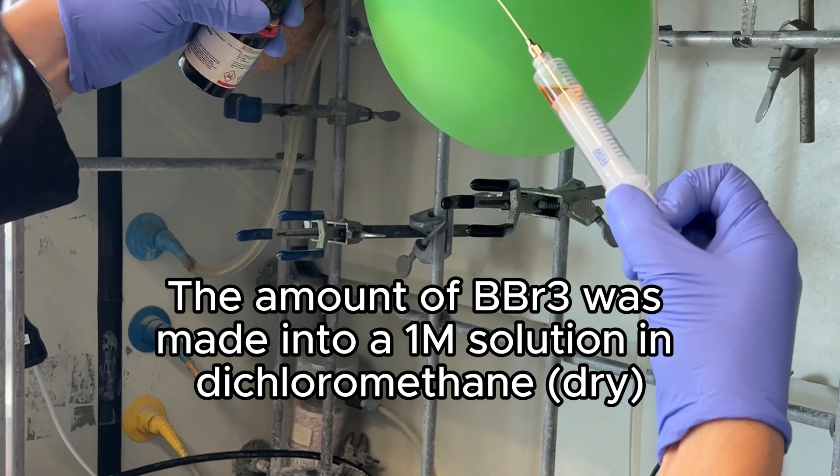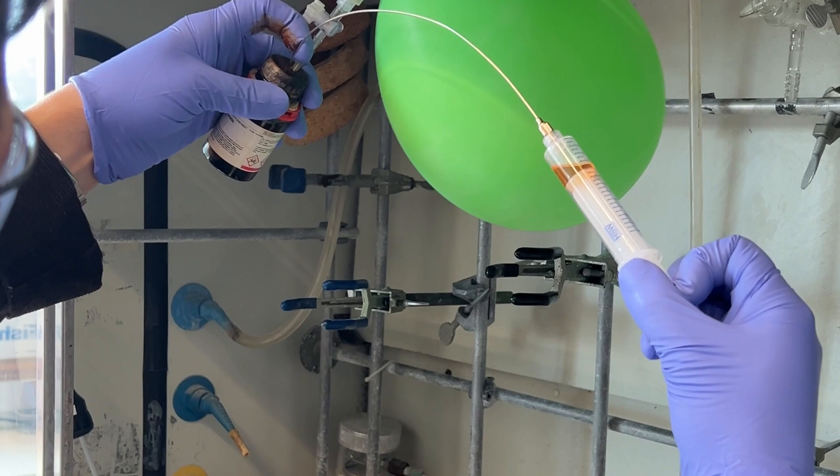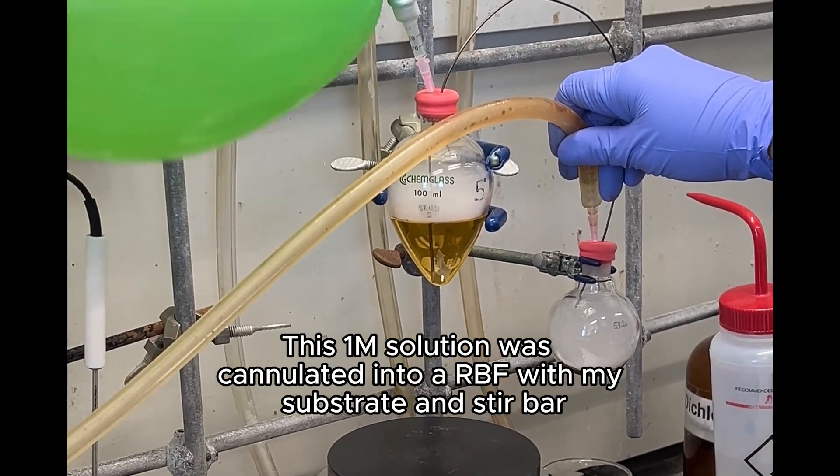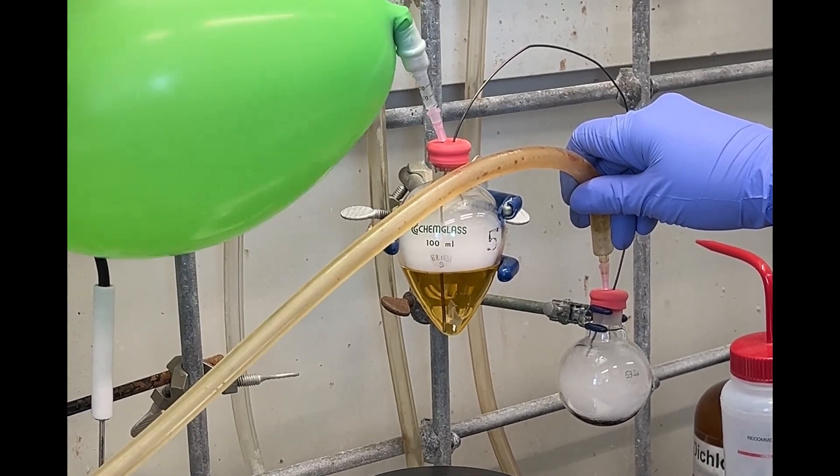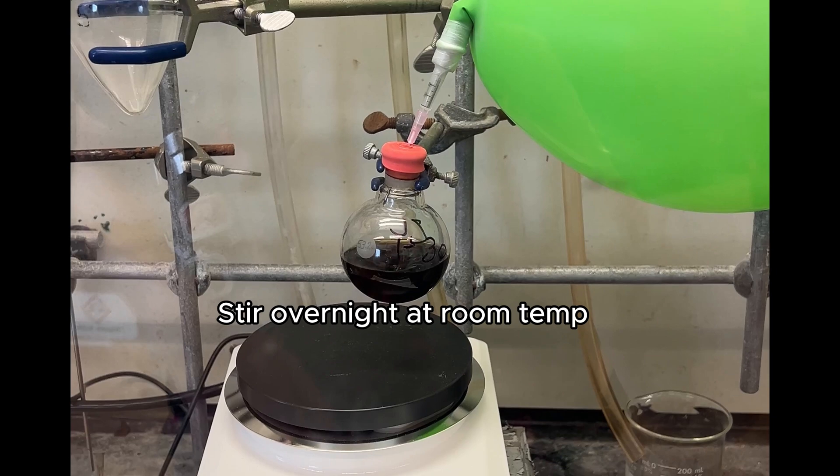I was able to take this amount of BBR3 to make a one molar solution in dry dichloromethane. This one molar solution was cannulated into a round bottom that was also dry and purged with argon, containing my substrate and a stir bar. The reaction went overnight at room temperature.